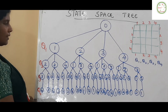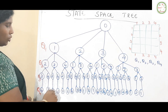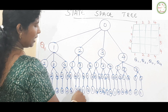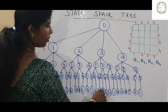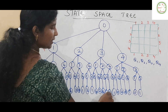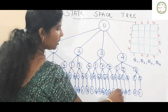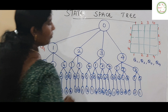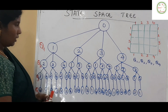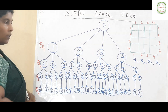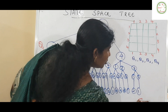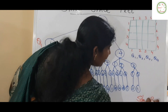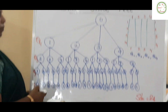So altogether for solving this particular problem, how many solutions do we have? Counting all the leaf nodes: 1, 2, 3 ... 24 nodes. The number of leaf-node solutions we have is 24. This is because for 4 queens we have 4 factorial = 24 possible arrangements in the complete state space tree.